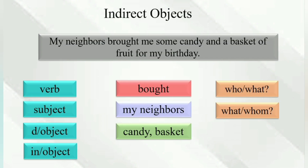'The frightening experience taught the child some important lessons.' Verb: taught. Who taught? The frightening experience. The frightening experience taught what? Lessons. Lessons to whom? The child. So 'the child' is the indirect object.